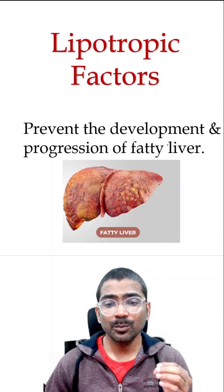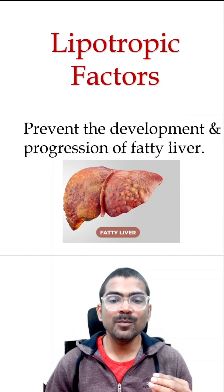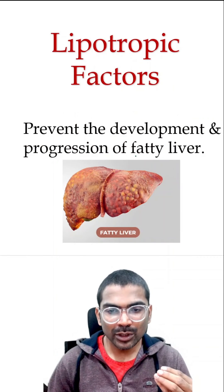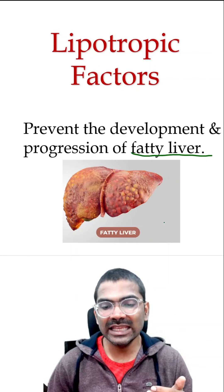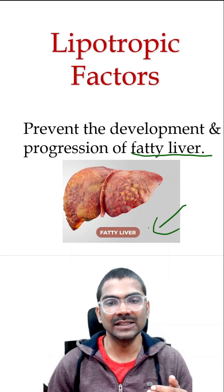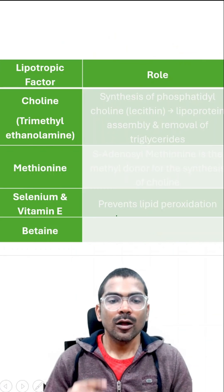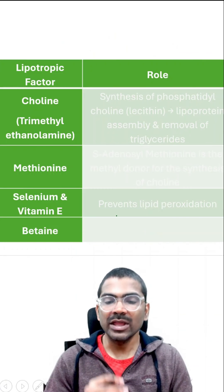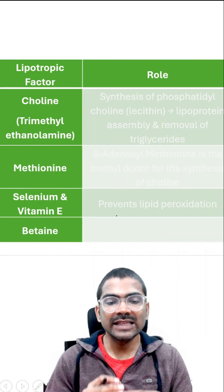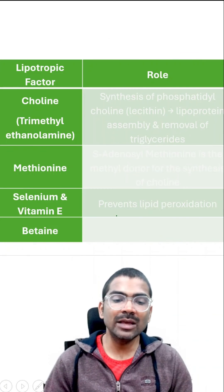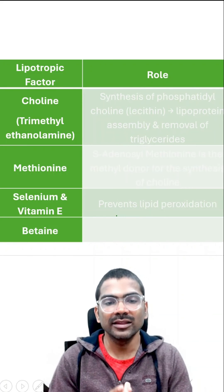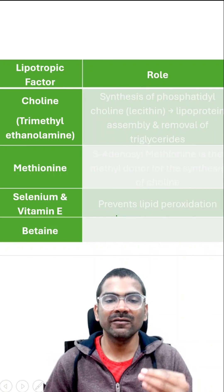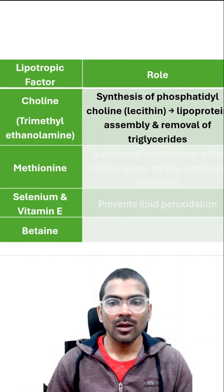Lipotropic factors prevent the development and progression of fatty liver disease. Choline, methionine, selenium, vitamin E, and betaine are the lipotropic factors.